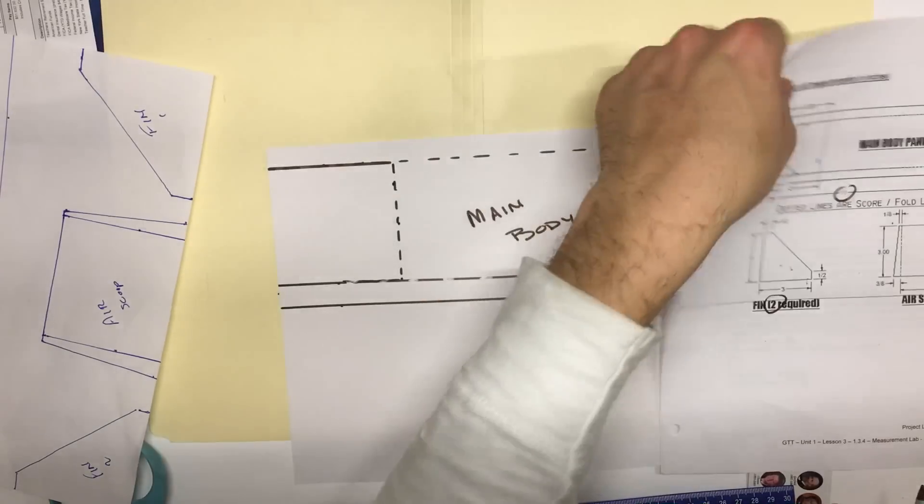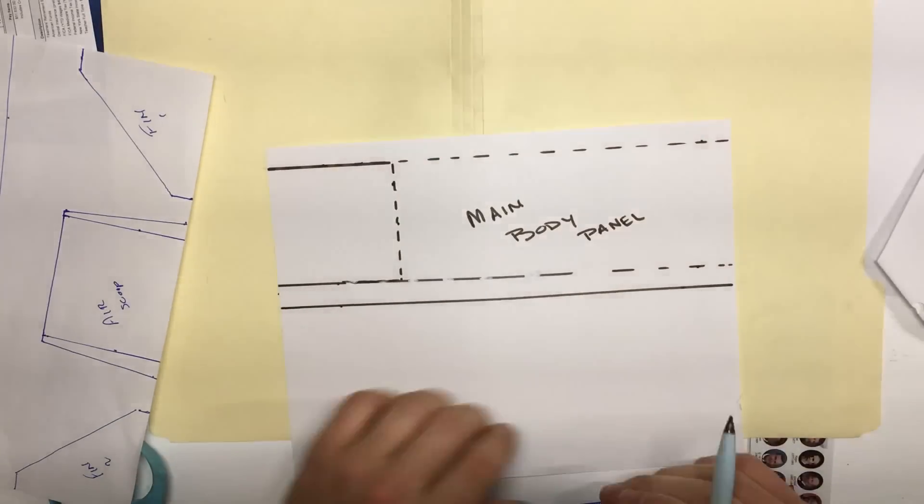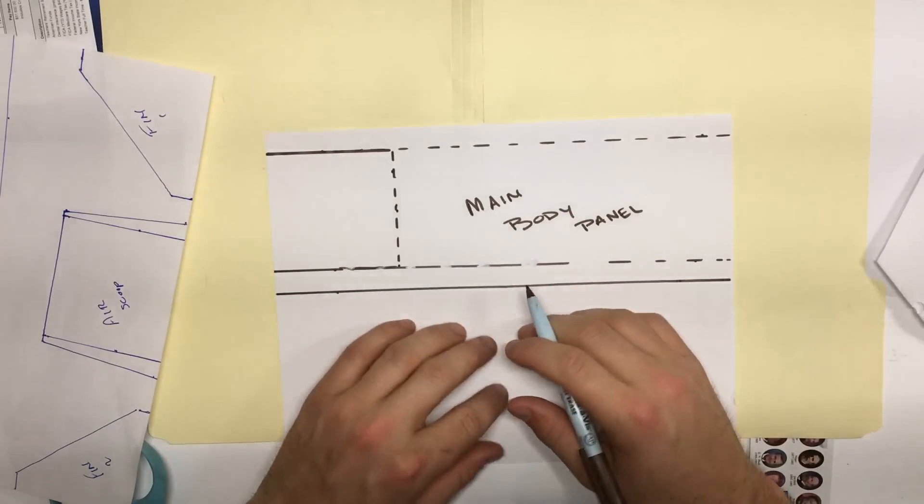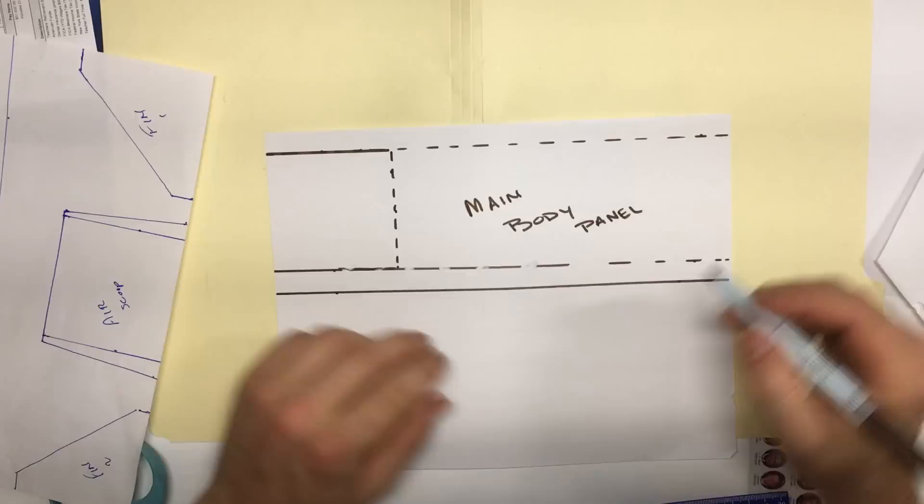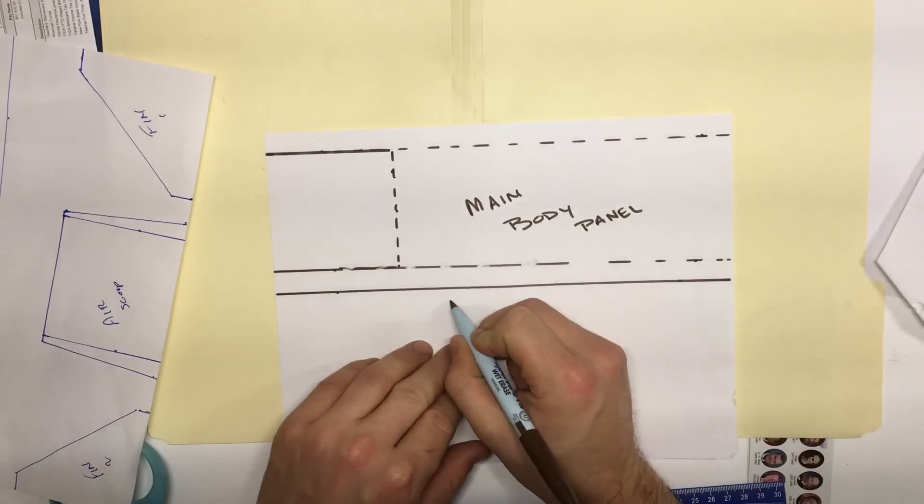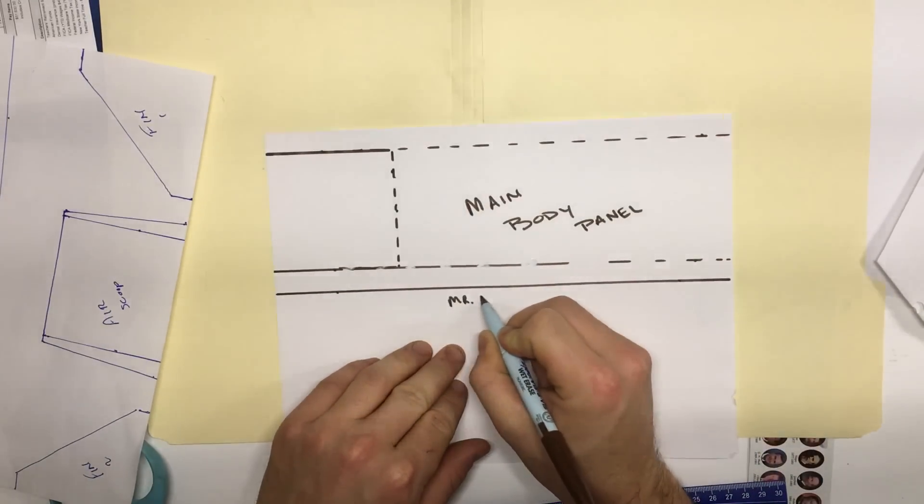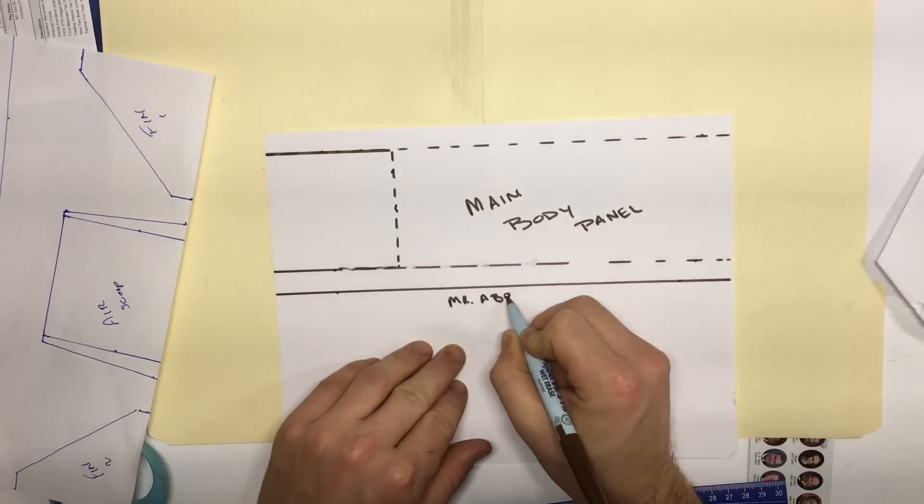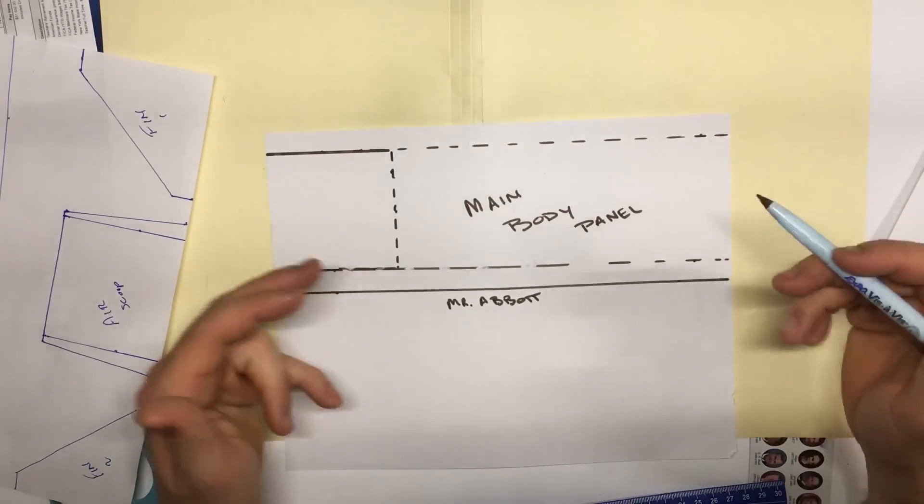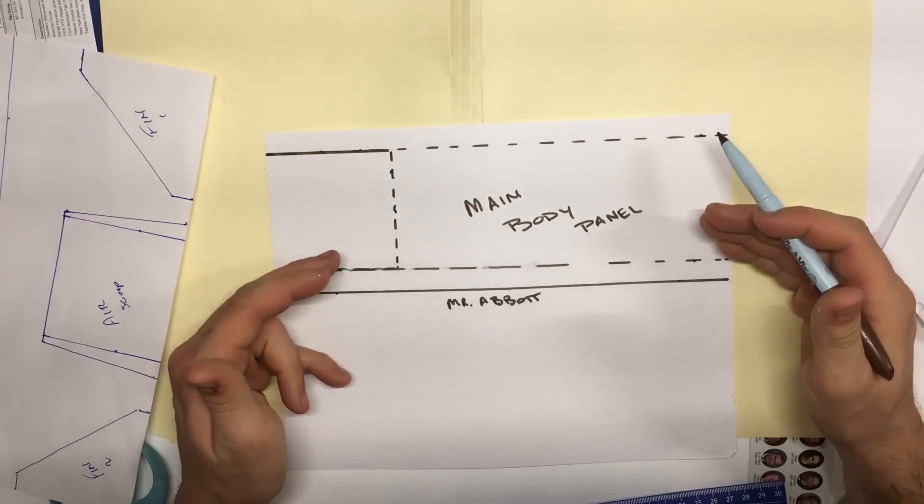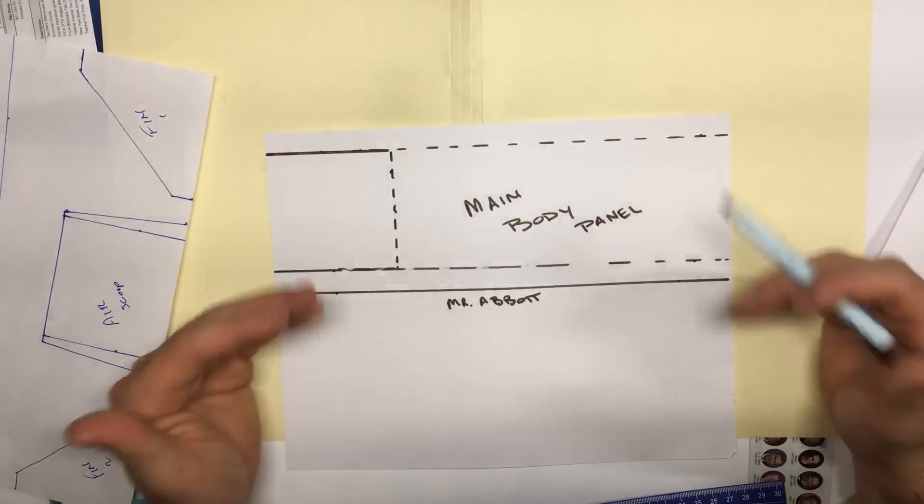The video should be paused now for approximately eight to 10 minutes while the students draw their main body panel. At the end of this, make sure the students write their name right here. If you get this done today, this is the main thing I want done. So take a minute now and pause the video.